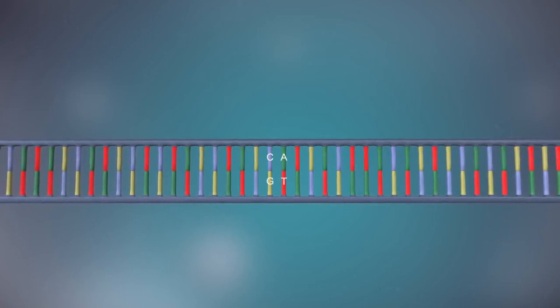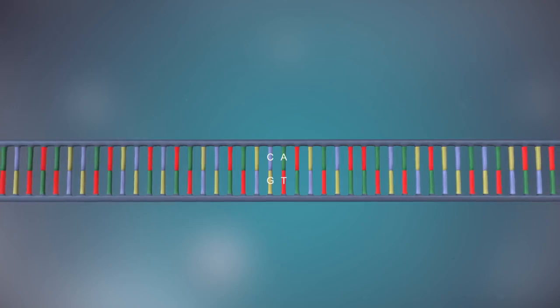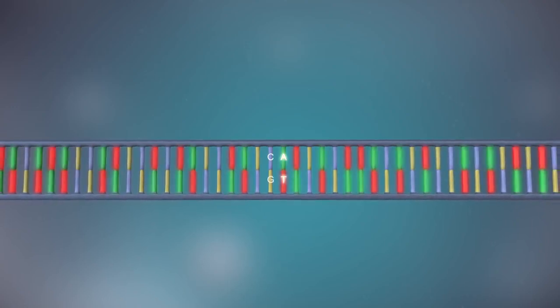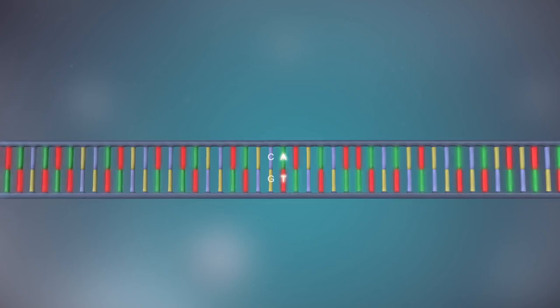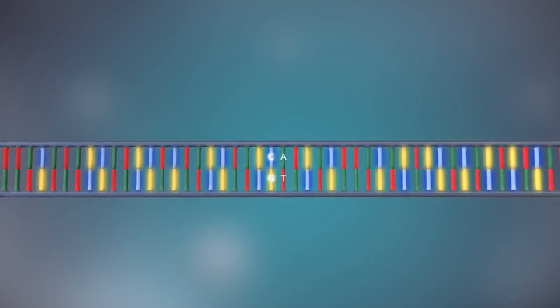The two strands are complementary. This means that wherever there's a T in one strand, there will be an A in the opposite strand, and wherever there's a C, there will be a G in the other strand.